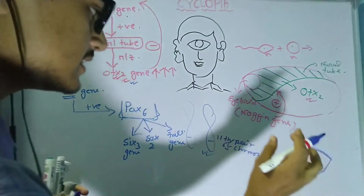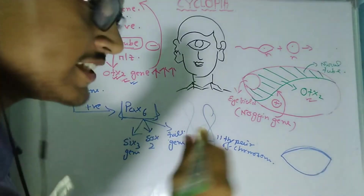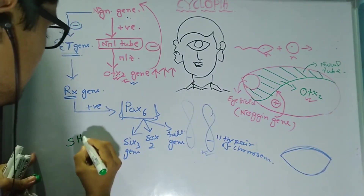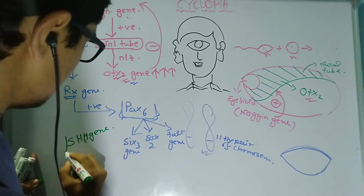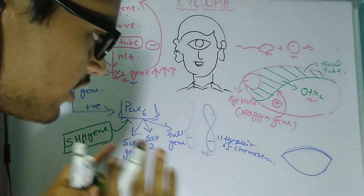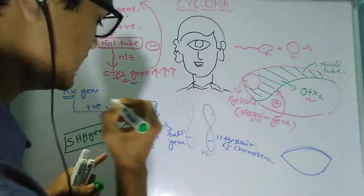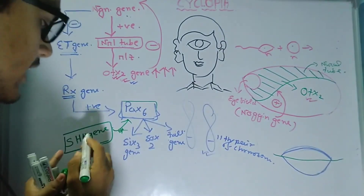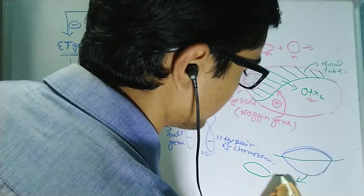After the formation of the single eye field, a special gene is expressed called the SHH gene, or Sonic Hedgehog gene. This gene intervenes in the function of the Pax6 gene and bilaterally divides this single eye field into two eye fields. Finally, we get two eye fields in humans through the action of the Sonic Hedgehog gene.